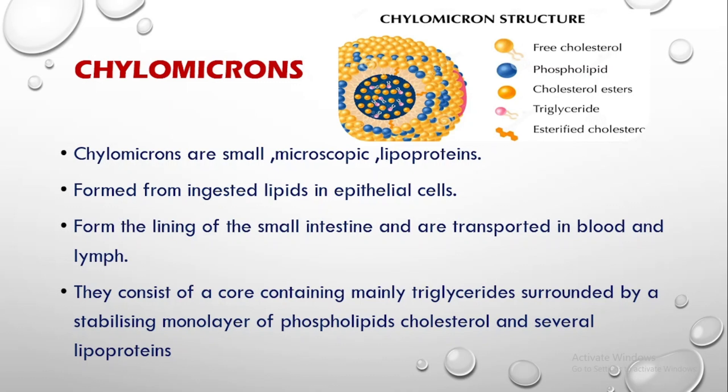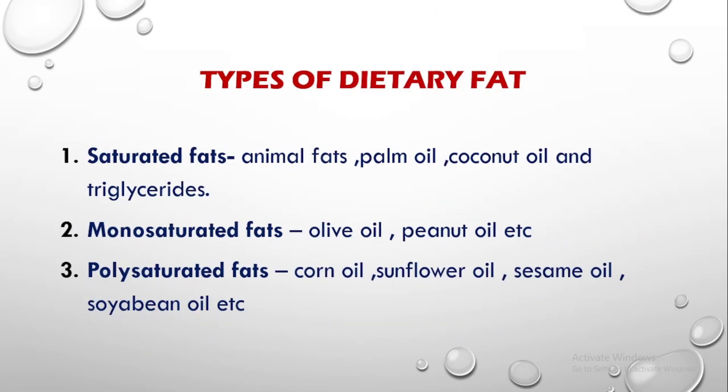The chylomicrons in our body — which you must have studied in the digestive system — are lipoproteins, very small and microscopic. They are formed from lipids ingested in epithelial cells. From the lining of the small intestine they are transported in blood and lymph, and they consist of a core containing mainly triglycerides surrounded by a stabilizing monolayer of phospholipids, cholesterol, and some more lipoproteins. In this diagram, the blue droplets are phospholipids and in the center you will find triglycerides.